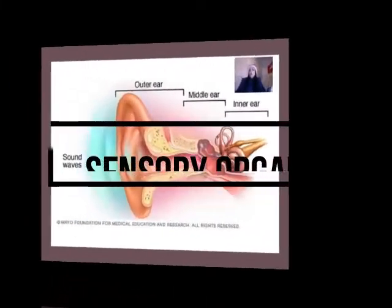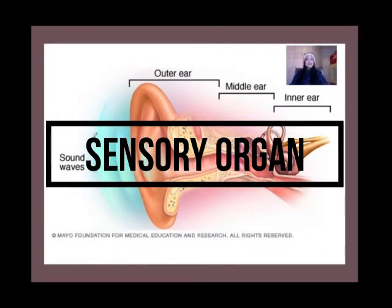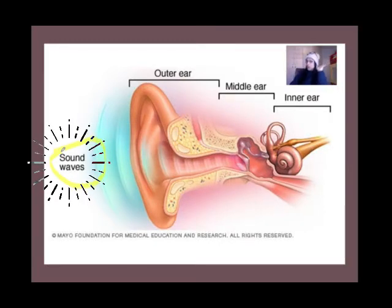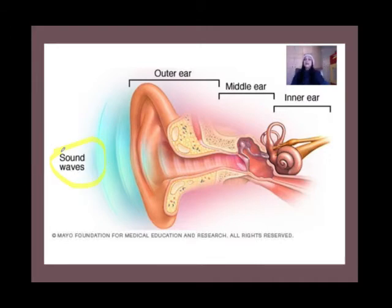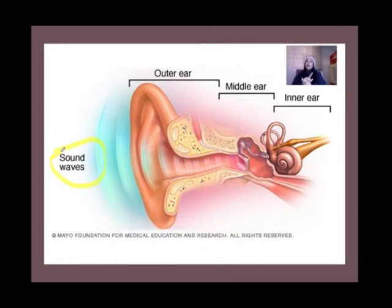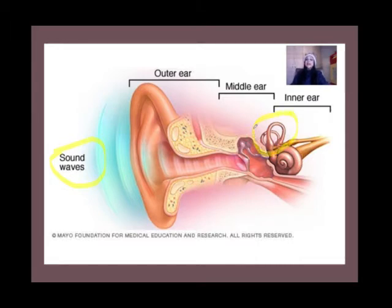The ear is a sensory organ that picks up sound waves, allowing us to hear. But it is also essential to our sense of balance. The organ important for our sense of balance is our vestibule, which is found in our inner ear.